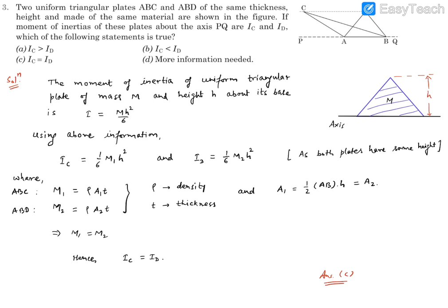Now using this, we can say IC, that means the moment of inertia of ACB plate about this base axis, is going to be equal to 1 by 6 M1 H square.